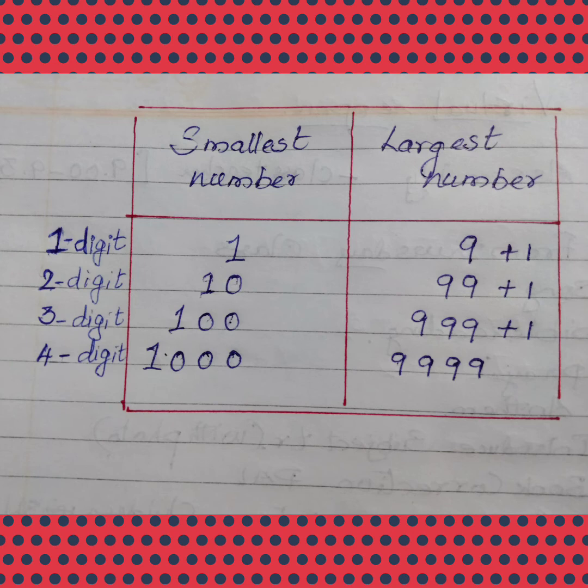To make it easier, I have prepared a table for you. Look at the table. The columns are smallest number and largest number. The first one shows 1 digit number. Smallest number is 1 and largest number is 9. And after 9, it is 10.